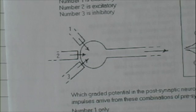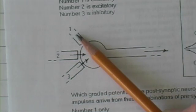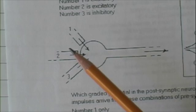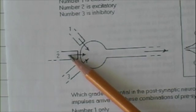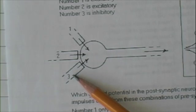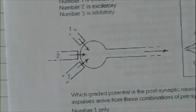Furthermore, let's assume neuron, presynaptic neuron number one and number two are excitatory, and presynaptic neuron number three is inhibitory. This is not a difficult idea.